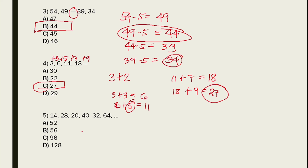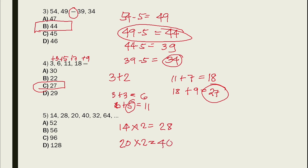So we have 14 and 28. The pattern is: multiply by 2, then subtract by 8, then multiply by 2 again, then subtract by 8. So 14 times 2 equals 28. Then 28 minus 8 equals 20, and 20 times 2 equals 40.